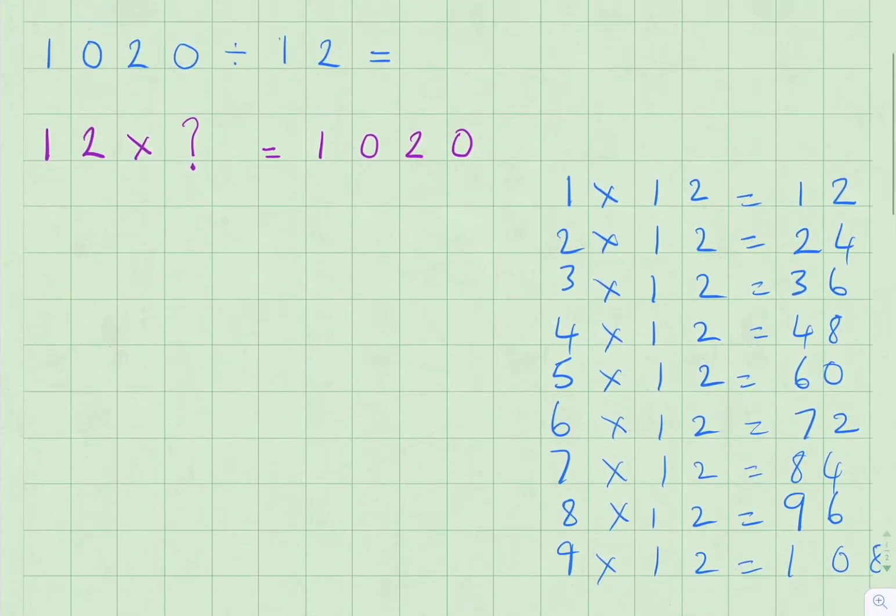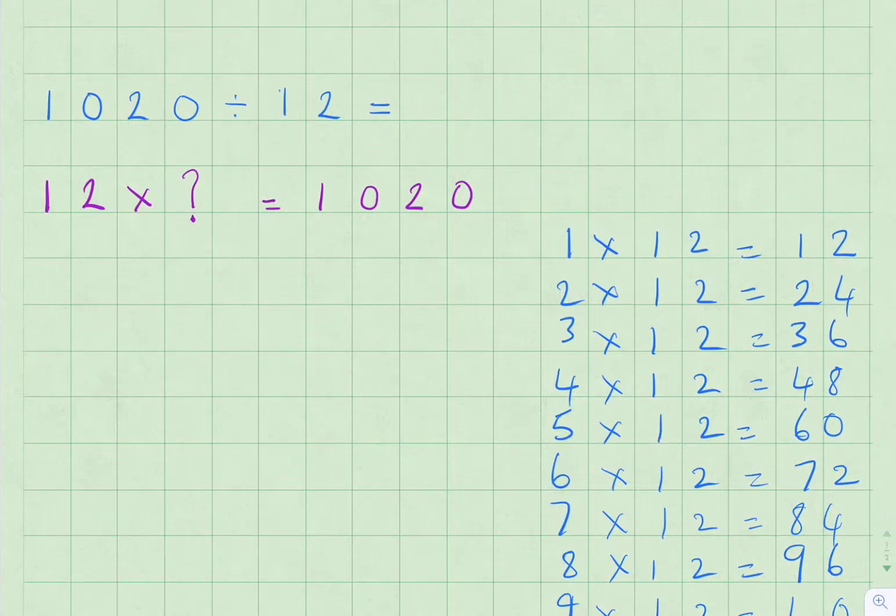So now we need to set the division sum up. We are dividing 12 into 1020. And the first question we need to ask is, does 12 go into 1? 12 doesn't go into 1. Does 12 go into 10? 12 doesn't go into 10.